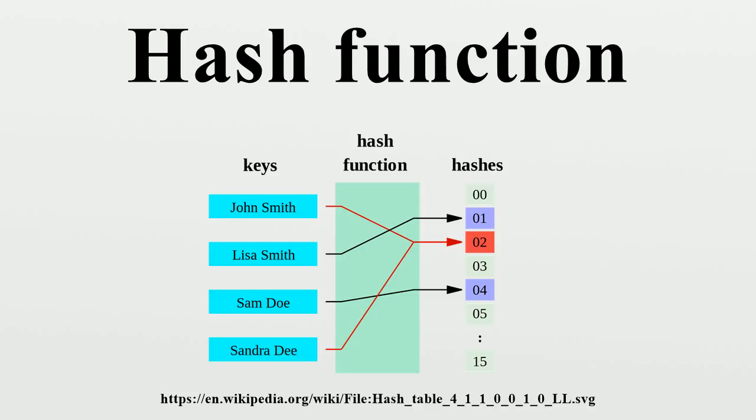In other words, if a typical set of M records is hashed to N table slots, the probability of a bucket receiving many more than M/N records should be vanishingly small. In particular, if M is less than N, very few buckets should have more than one or two records. When testing a hash function, the uniformity of the distribution of hash values can be evaluated by the chi-squared test.